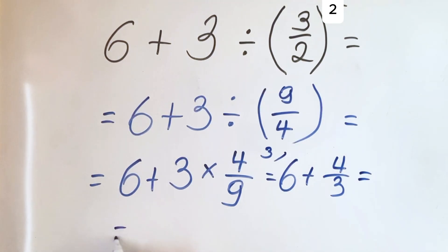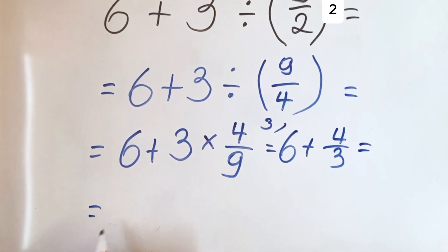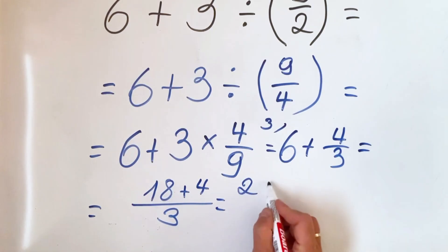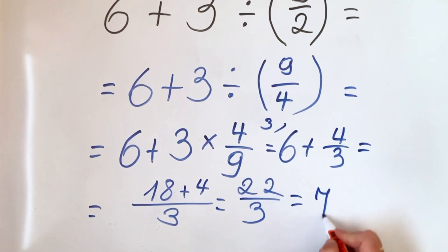What we get is 18 + 4 over 3, so we get 22 over 3, and the final result is 7 and 1/3.